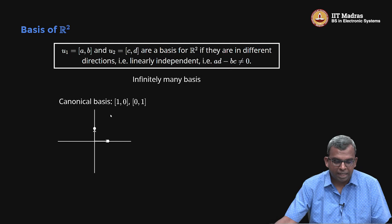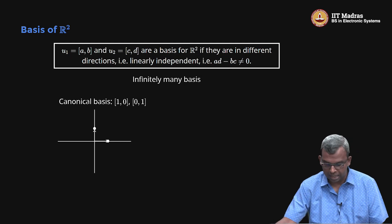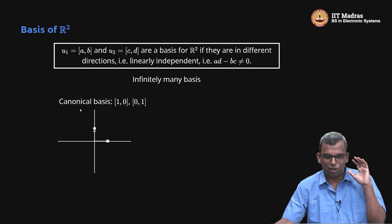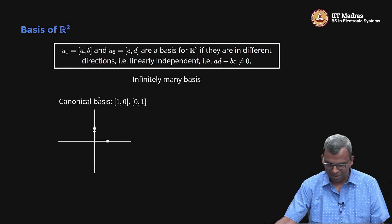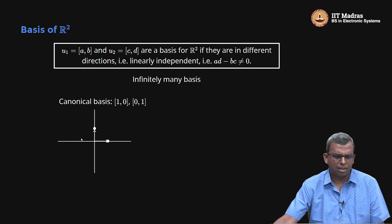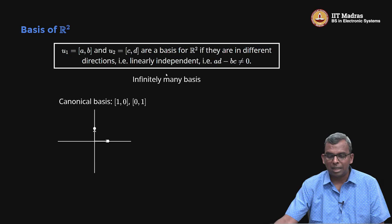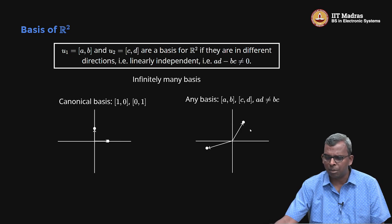One of the most interesting bases for R2 is what is called the canonical basis. The word 'canon' refers to rules — canonical means standard or accepted. The canonical basis is {(1,0), (0,1)}. The vector (1,0) is here and (0,1) is here. This is clearly a basis; the vectors point in different directions and happen to be at 90 degrees, which is a very nice way to fix a basis.